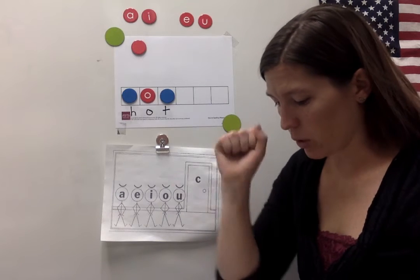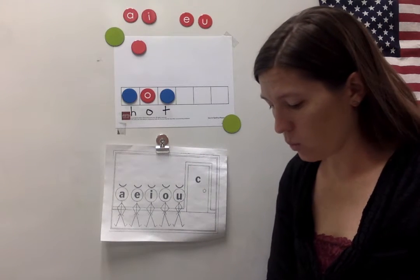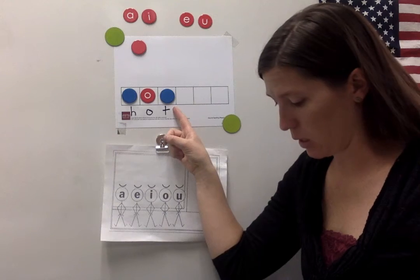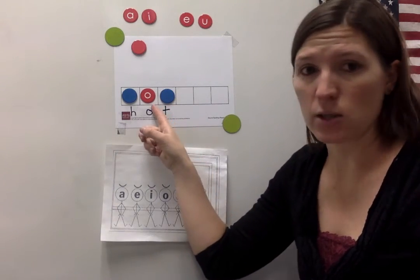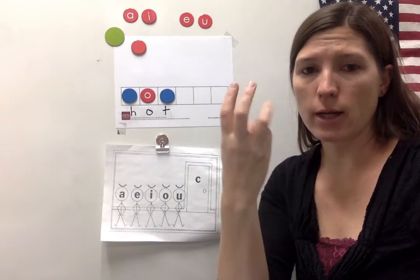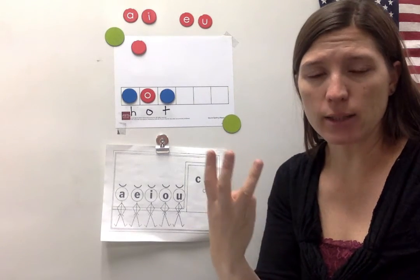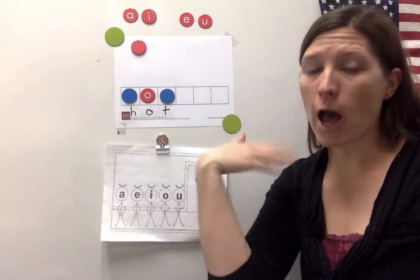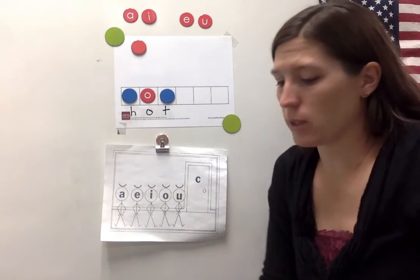This follows the closed syllable pattern. The vowel letter is O. It's followed by a consonant, so the sound is short. The sounds are H-O-T. My word is hot. Last week it was really hot outside. This week it's cold.